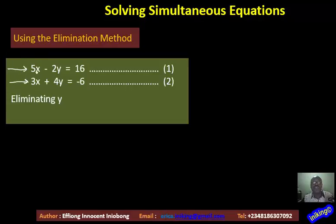So I'm going to multiply the whole of equation 1 by the coefficient of Y in equation 2, and that is 4. I'm going to multiply equation 2 by the coefficient of Y in the first equation, which is 2. Some other person may decide to use minus 2, it doesn't matter.